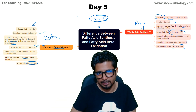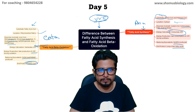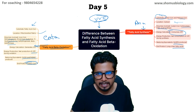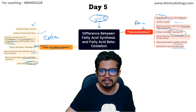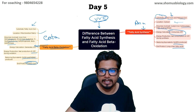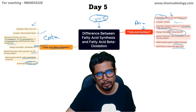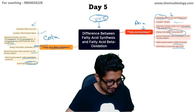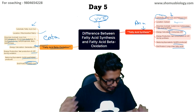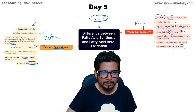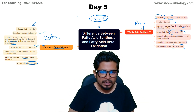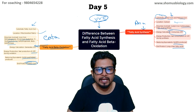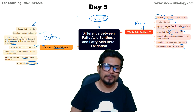Beta oxidation starts with fatty acid and ends in acetyl-CoA, while fatty acid synthesis starts from acetyl-CoA and ends in long-chain fatty acids — totally the reverse of each other.